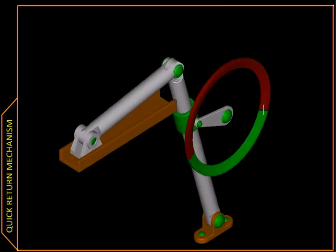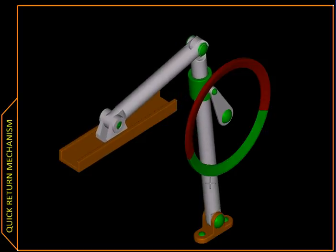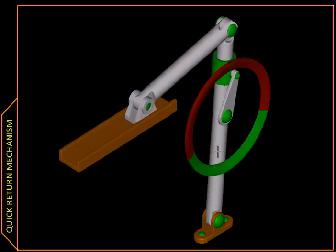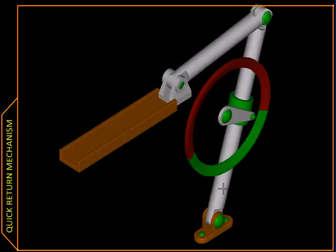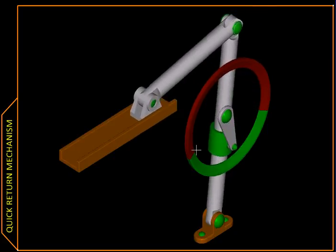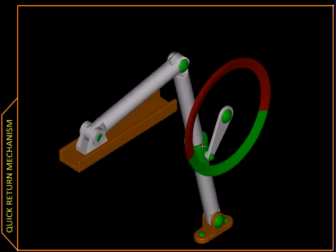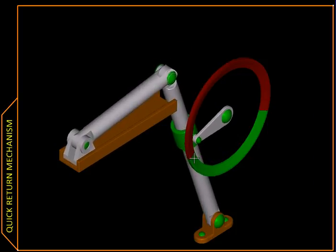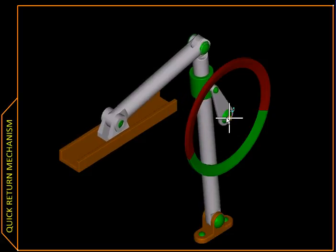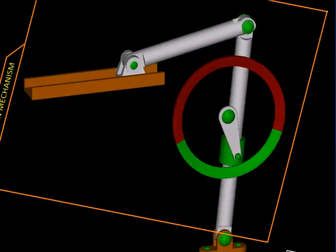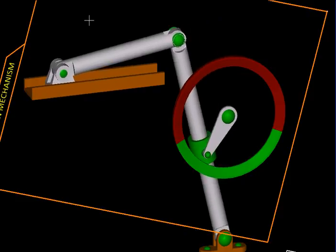Instead of using a lever with a slot, we have used a cylindrical lever, and instead of the slider we have a sleeve which slides on it. But essentially the mechanism or the characteristic of the mechanism remains the same. Let us now go to another manifestation.